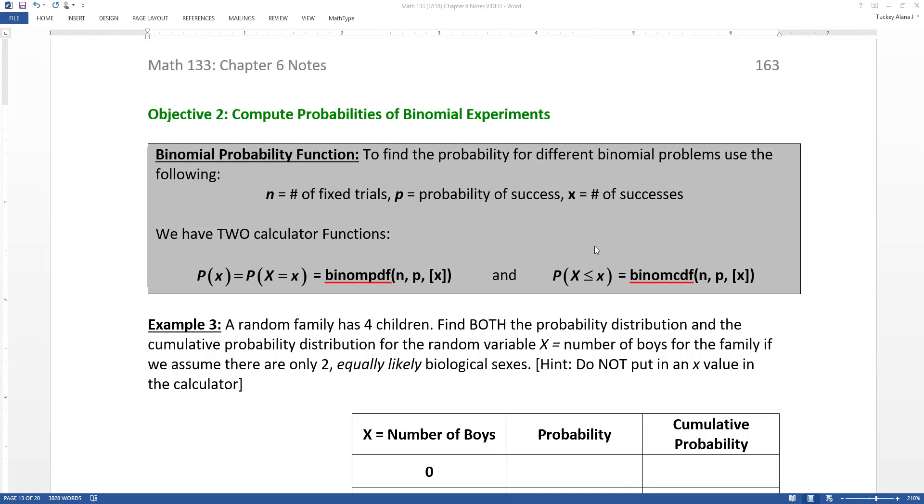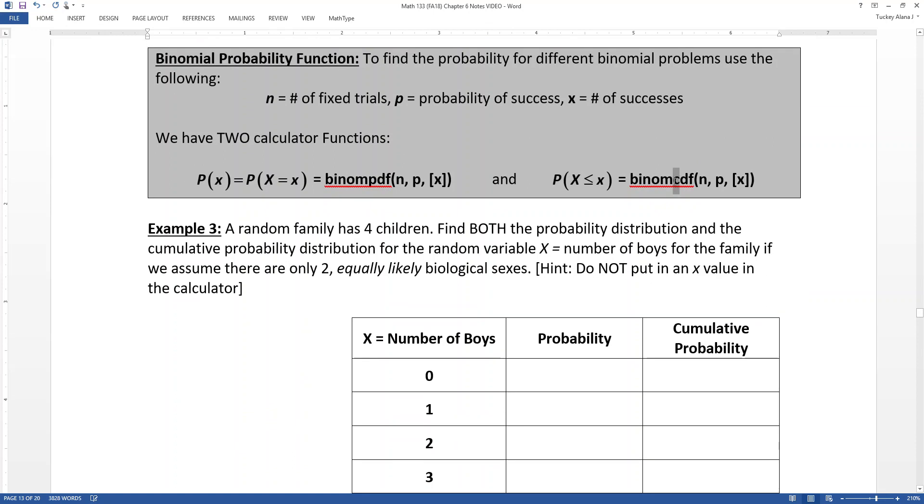There's two calculator functions we can use. There is the binom PDF, as in probability distribution function, and the binom CDF. C stands for the word cumulative, C-U-M-U-L-A-T-I-V-E. You're gathering, you're accumulating.